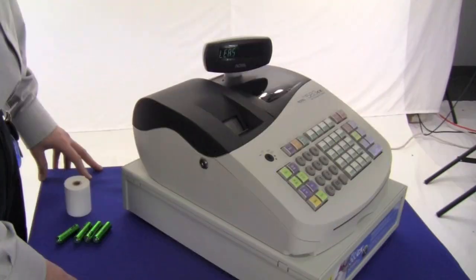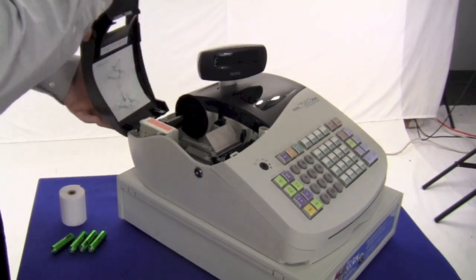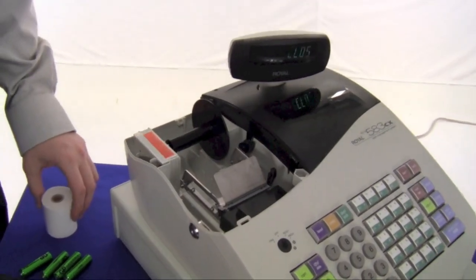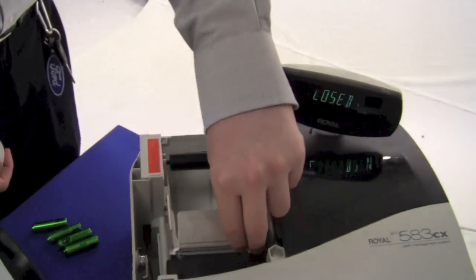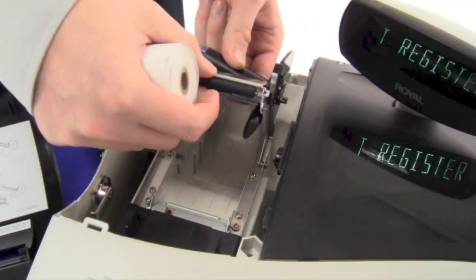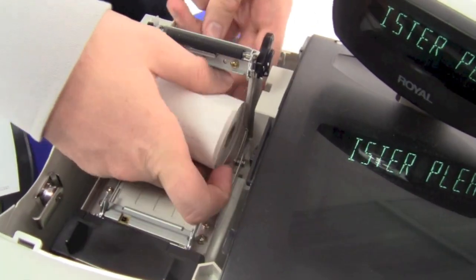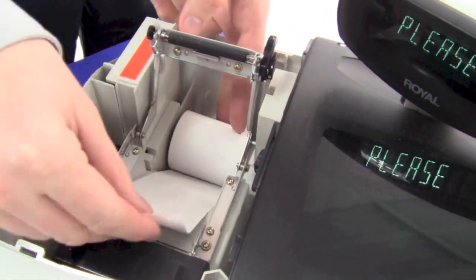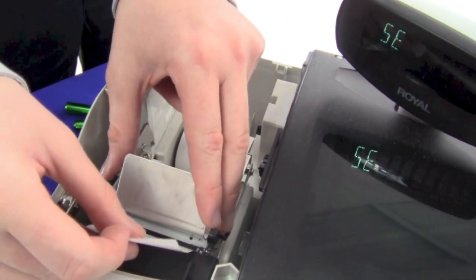To install the paper roll unlock and open the journal compartment cover. Lift the print roller. Carefully insert the paper roll. Lower the print roller.